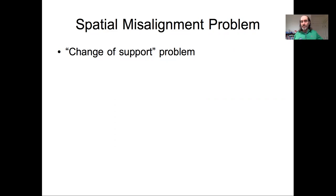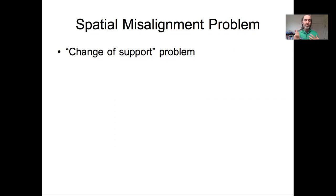In this last lecture on spatial data and how we model spatial data, I want to bring up a really important topic called the spatial misalignment problem. This problem is really common in environmental sciences where we have a lot of spatial data. It's also known as the change of support problem, and it's an area where the status quo in a lot of our fields can really abuse data and often lead to very falsely overconfident inferences.